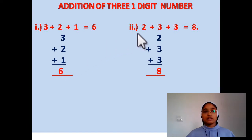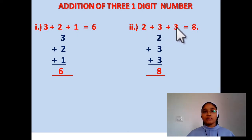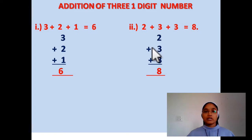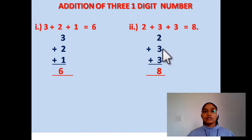Question number 2: 2 plus 3 plus 3, equal to 8. Here also, let us arrange these numbers by writing one below the other — 2 plus 3 plus 3. Now let us add it: 2 plus 3 is 5, 5 plus 3 is 8. Your answer will be 8.